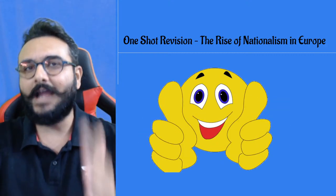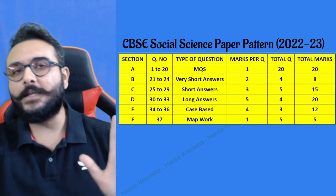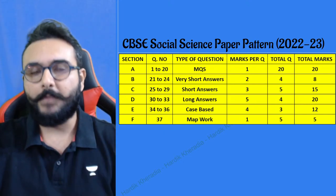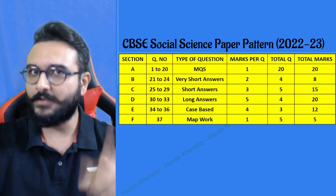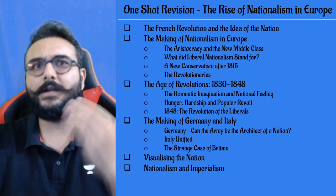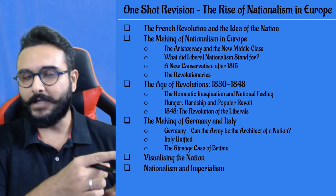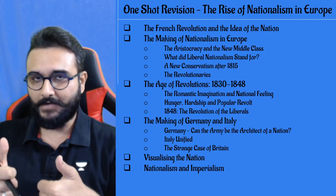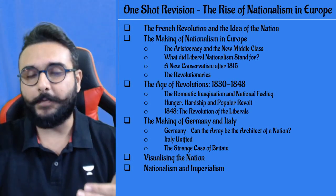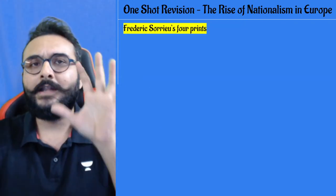Let's dive straight away into the topic. This is the CBSE paper pattern as per the CBSE sample paper of Social Science, so you can take a screenshot of this. Now this is the mind map of the chapter. One by one we'll complete all six topics along with the subtopics.